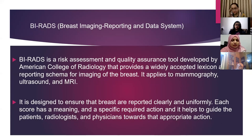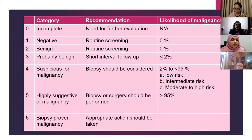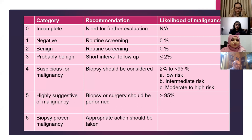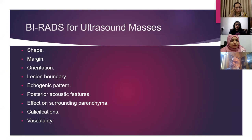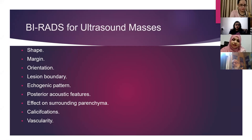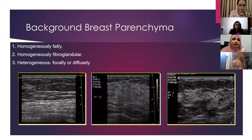BIRADS is designed to ensure that breasts are reported clearly and uniformly, and it helps guide patients, radiologists, and physicians toward appropriate action. The BIRADS category starts from 0 to 6. Whenever we get a lesion, we need to describe it under the following criteria: shape, margin, orientation, lesion boundary, echogenic pattern, posterior acoustic features, effect on the surrounding breast parenchyma, calcifications, and vascularity. Before describing a lesion, we need to always mention the background breast parenchyma.